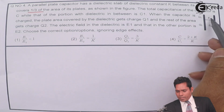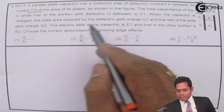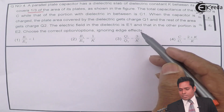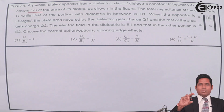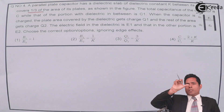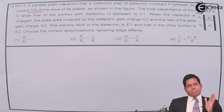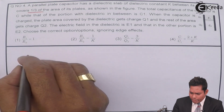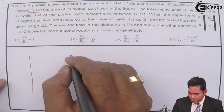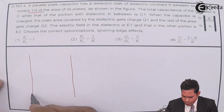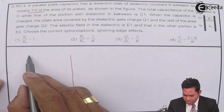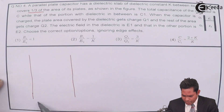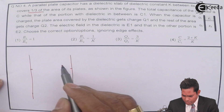The electric field in the dielectric portion is E1 and in the other portion is E2. We must choose the correct options, ignoring edge effects — that is, ignoring the electric field that turns around the edges. Let me draw the diagram more clearly. This is the total area of the plate, and out of which one third up to here is filled with dielectric.